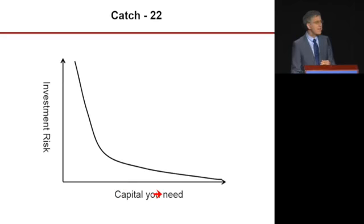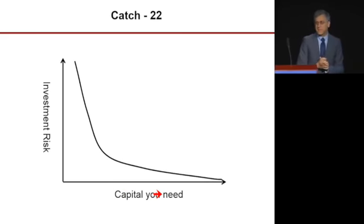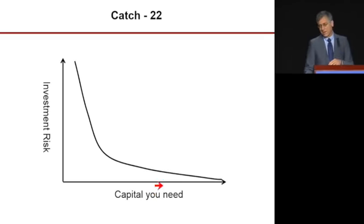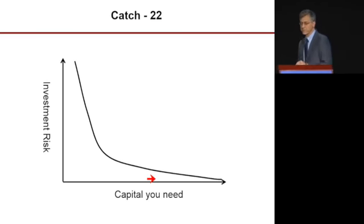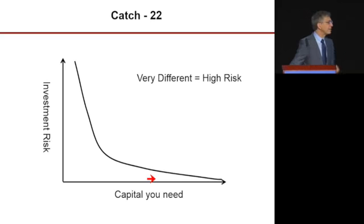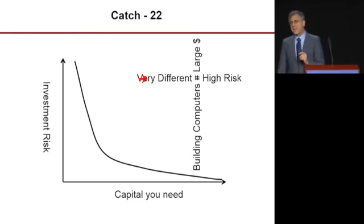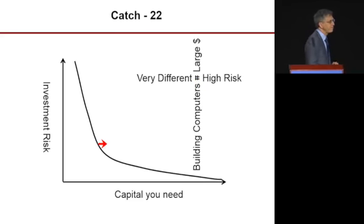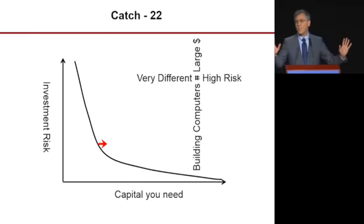If you're not asking for much money, a friend or angel investor can help. But as you start asking for hundreds of millions or billions of dollars, the number of people you can ask goes down and they become much more conservative. Creating a new computing technology requires very different physics — high investment risk — plus a billion working devices — massive capital. So I hope new technology will save us, but I'm not going to count my career on it.